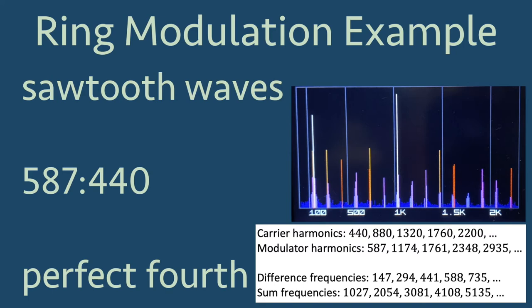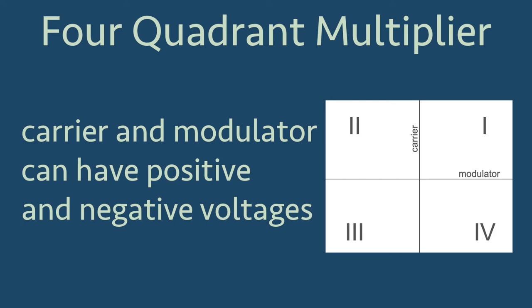The ring modulator is also called a four-quadrant multiplier, since it responds to positive and negative voltage at the inputs for the carrier and modulator. The sine and sawtooth waves have positive and negative voltages, and waveforms with frequencies at audio rate are usually best for the four-quadrant multiplier.